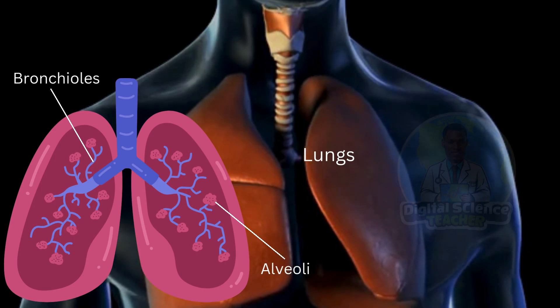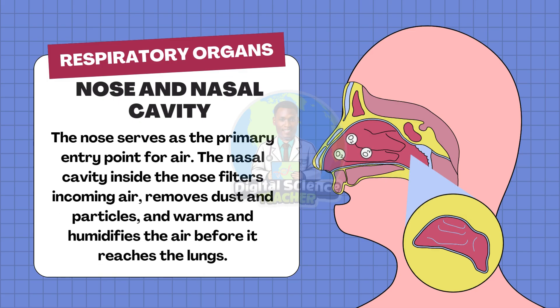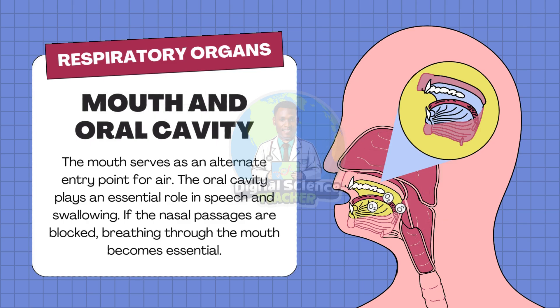Let us look at the function of each part of the respiratory system. The nose or nasal cavity serves as the primary entry point for air. The nasal cavity inside the nose filters incoming air, removes dust, and humidifies the air before it reaches the lungs. The mouth and oral cavity serve as an alternative entry for air and play an important role in speech and swallowing. If the nasal passages are blocked, breathing through the mouth becomes essential.